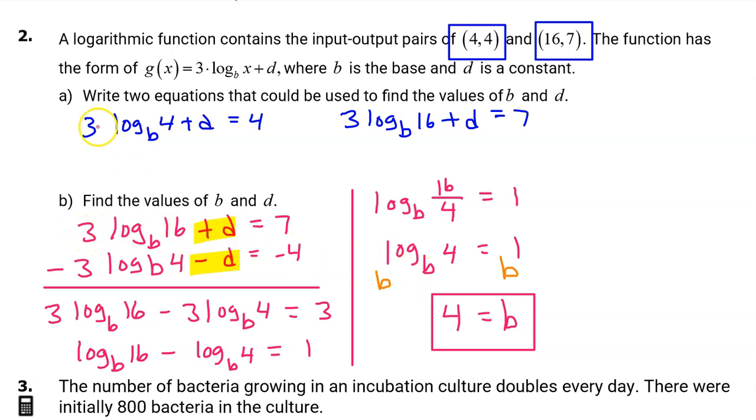We still need to find the value of d. So let's use really either one of these equations to find d. I'm going to use the first equation. Recopying, we have 3·log_b(4) + d = 4. But now we know that b is 4. So that gives us 3·log₄(4) + d = 4. That's a lot of 4s. The log base 4 of 4 is 1 because 4 to the 1 power gives you 4. So this whole part of it is just a 1. 3 times 1 is just going to be 3. So we have 3 + d = 4. And subtracting 3 from both sides leaves us with d = 1.